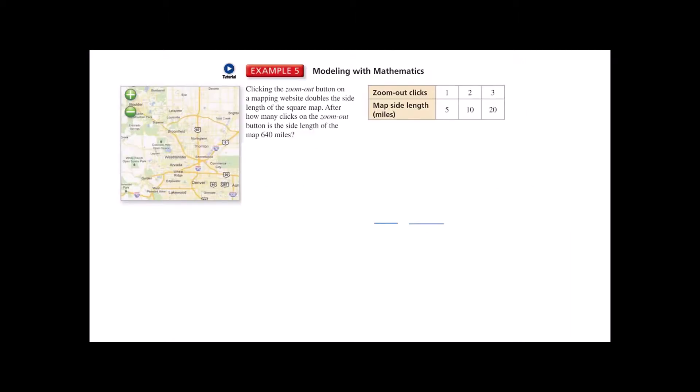Here's what this might look like in a more of a real world type setting. Clicking the zoom out button on a mapping website doubles the side length of the square map. After how many clicks on the zoom out is the side length of the map 640? Well, you can see here the first value in this sequence is the 5, then a 10, then a 20. What seems to be happening here? Well, we started at 5 and we're multiplying by 2. We're going to multiply by that 2 repeatedly. The question is, when would we reach 640 miles?